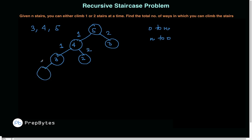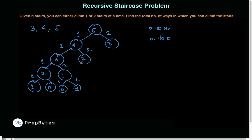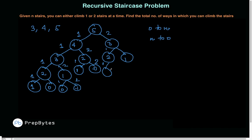Continuing the tree: from 3 again, one step gives 2, two steps gives 1. From 2, one step gives 1, two steps gives 0. From 1, one step gives 0, two steps gives minus 1. So across the full tree for n=5, we see values of 0, 1, and minus 1 appearing repeatedly at the leaf nodes.